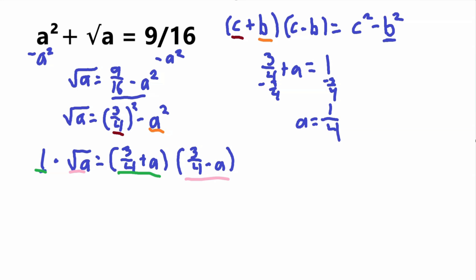If a equals 1 fourth, we need to plug it into this equation, since we said this would be square root of a. Square root of 1 fourth equals 3 fourths minus 1 fourth. Square root of 1 fourth is 1 half, because 1 half times 1 half equals 1 fourth. 3 fourths minus 1 fourth equals 1 half. So we have 1 half equals 1 half. This proves that a equals 1 fourth is true.